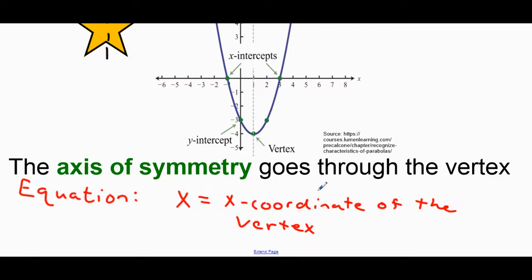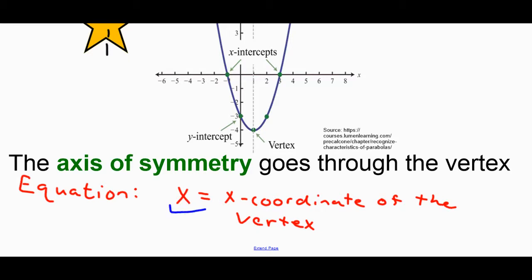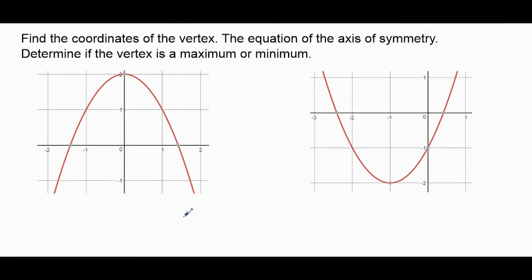To find the equation of the axis of symmetry, here's what you do: the equation of the axis of symmetry is X equals the X-coordinate of the vertex. If you remember back to graphing, whenever you have X equals something, that is a vertical line. For parabolas that open up or down, the equation for the axis of symmetry will always be a vertical line.